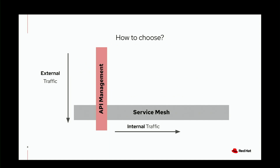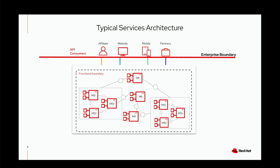So how do we choose? Service mesh is typically within your organization — how services speak with each other from an internal traffic perspective. API management on the other hand handles external traffic — how others connect with you to access your data and applications. Putting these together, you bring service mesh architecture and API management architecture together, covering internal services and external services, with your APIs and all your consumers, within functional boundaries and enterprise boundaries.